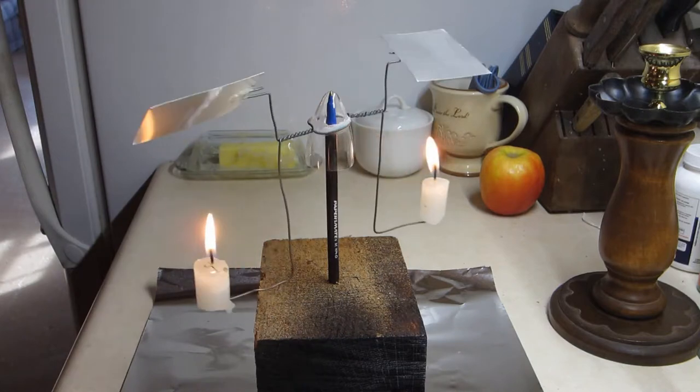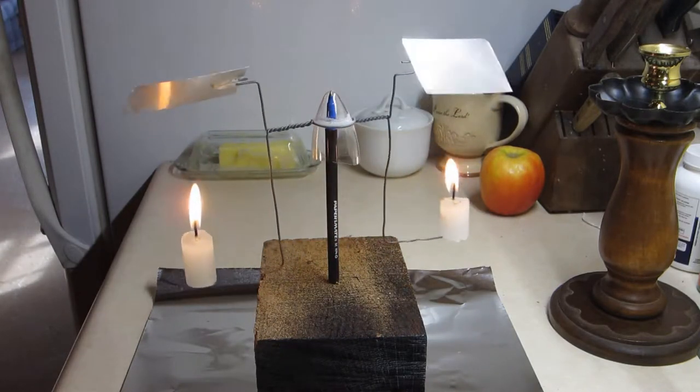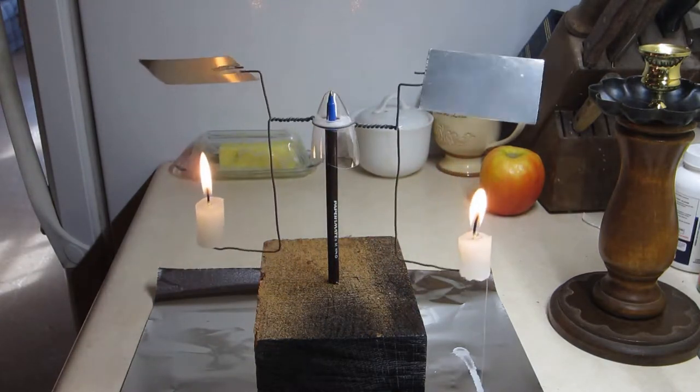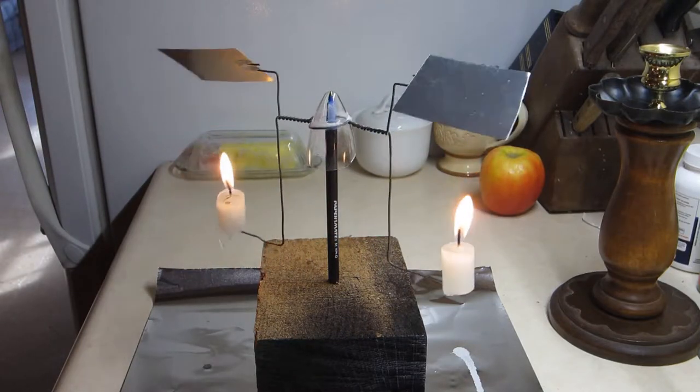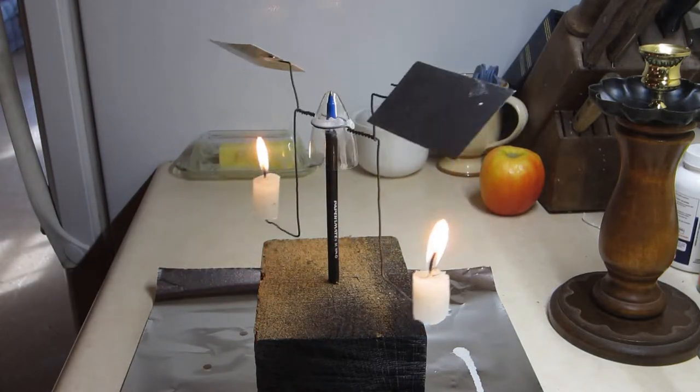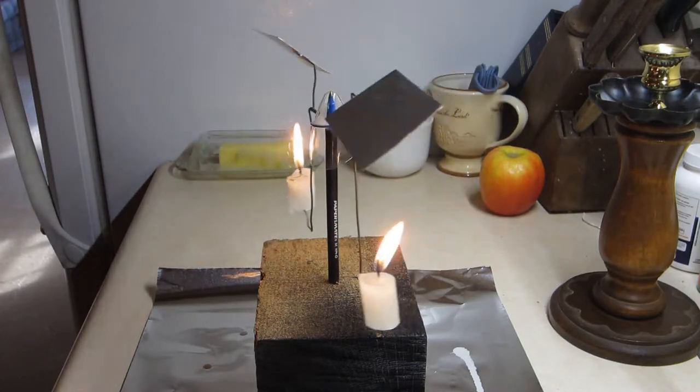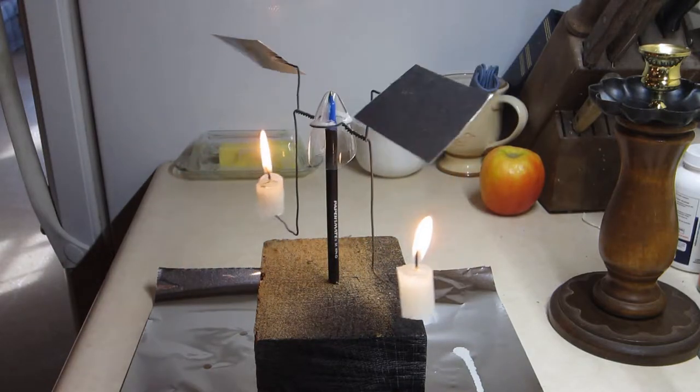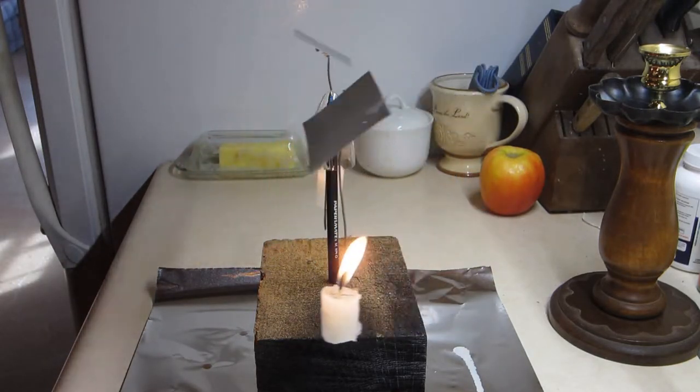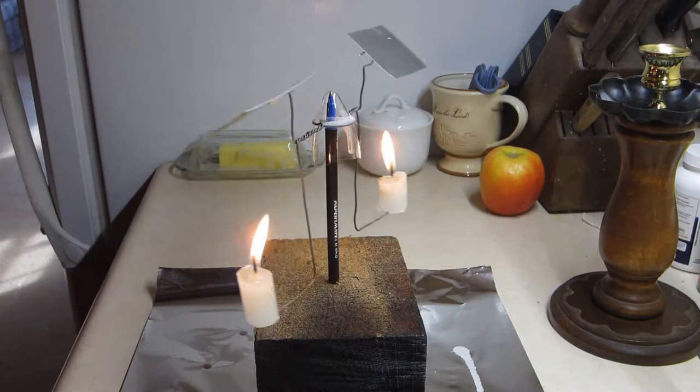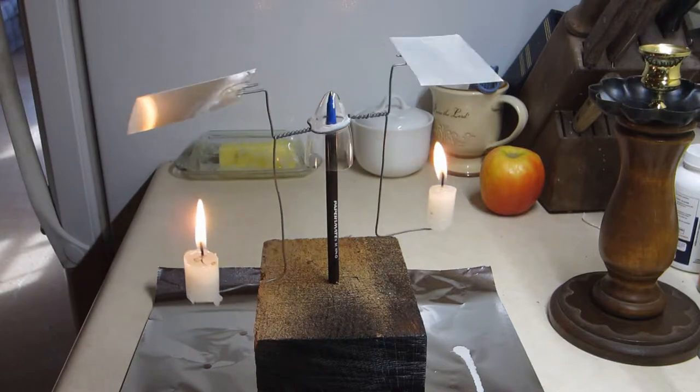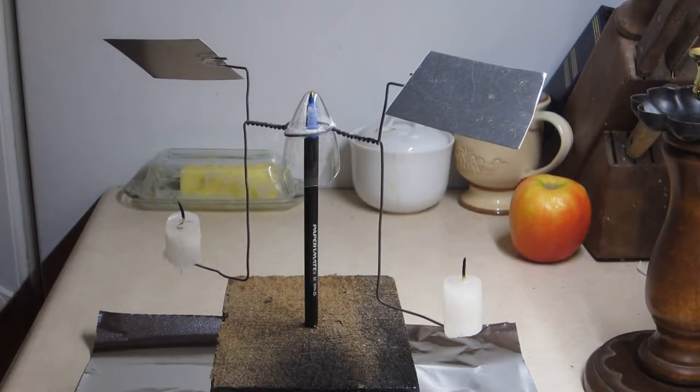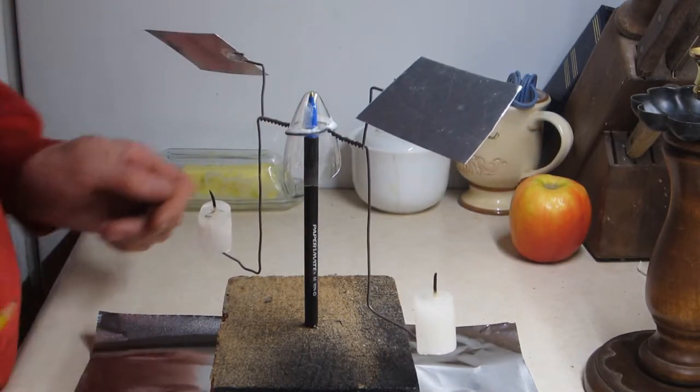This is dirt cheap to make. That candle is dripping, and it leaves a string of drips all the way around on that foil. Okay, so some tips on how to build one of these things.